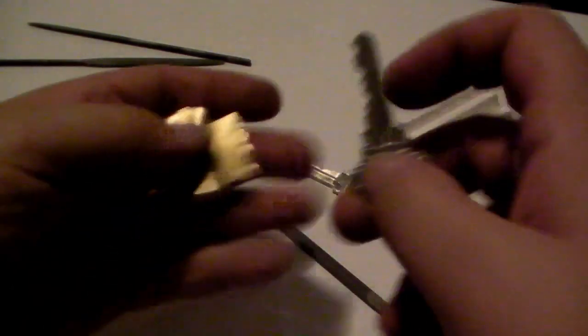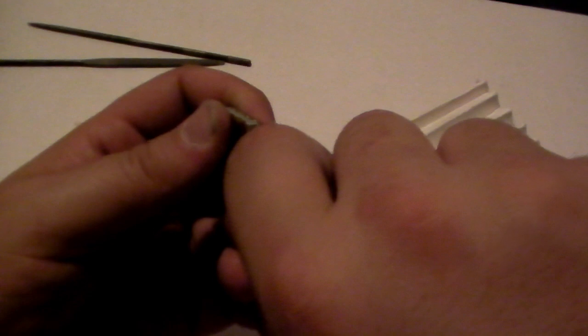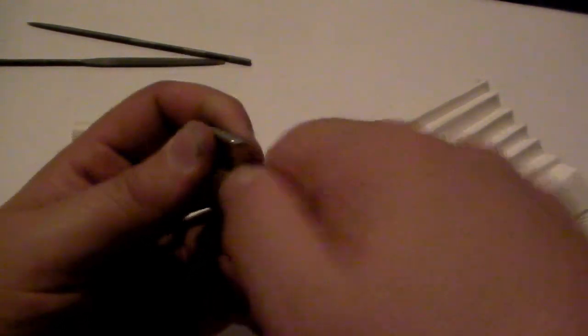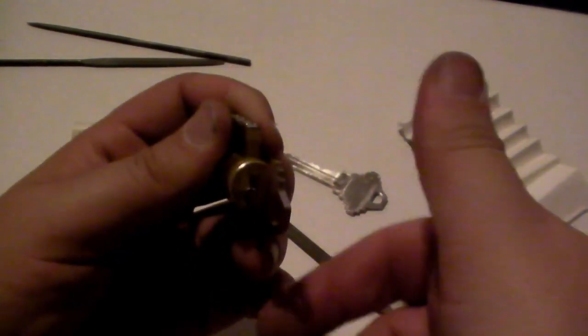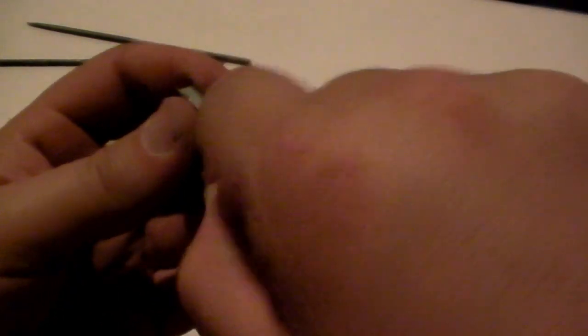And our other key right here should only turn counter. It turns counter pretty well, got a little catch, but that's not so bad. Counter, counter, counter. And now it cannot turn clockwise. This key can only unlock the door, depending on mounting of course. But those are the traditional directions.